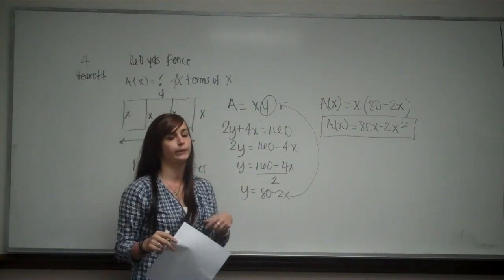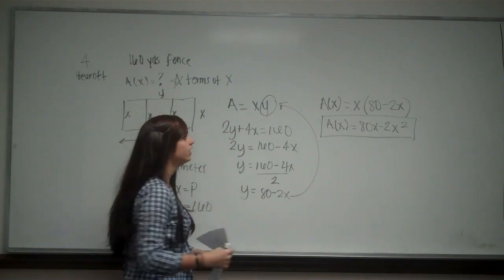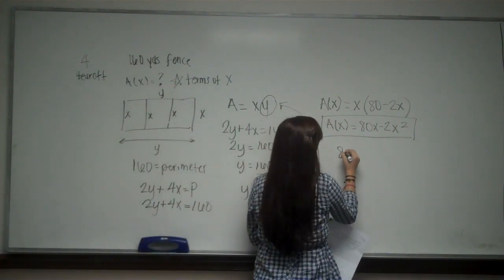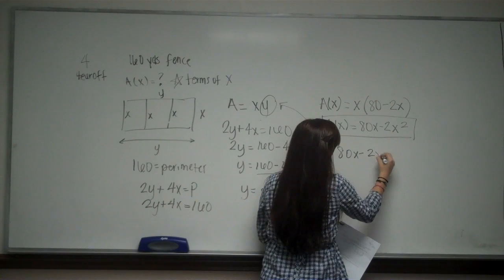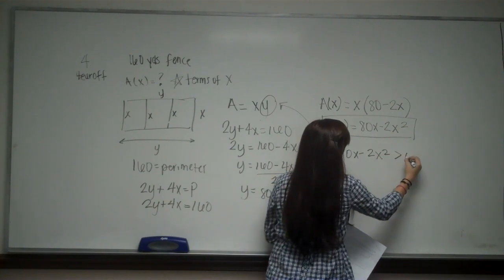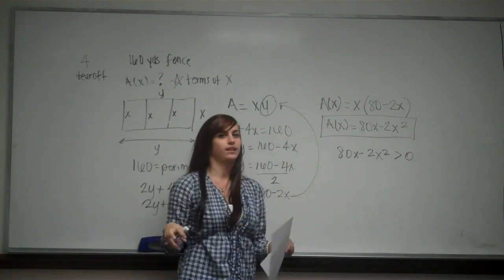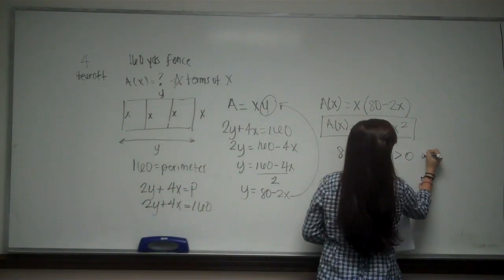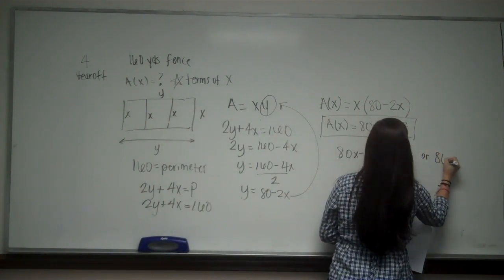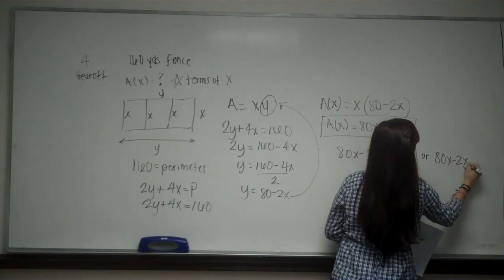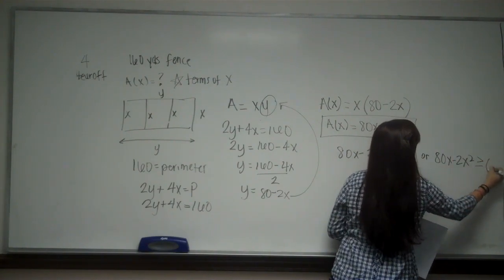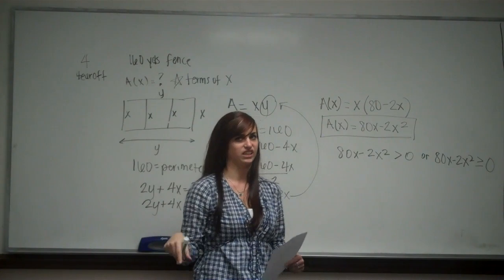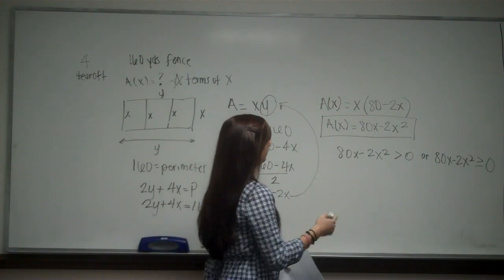And what happens with this is we can't have a negative area. So I need to set this equation greater than zero. Now some people debate like you can have a zero area, or it can be 80x - 2x² is greater than or equal to zero. And they took either answer.